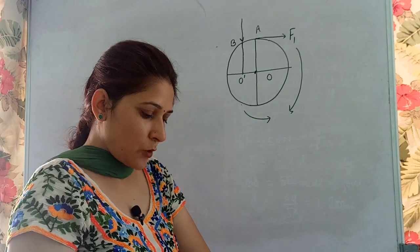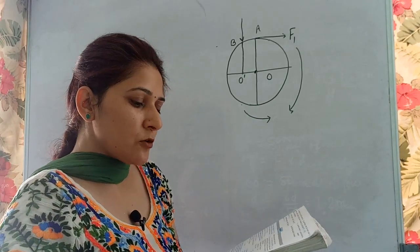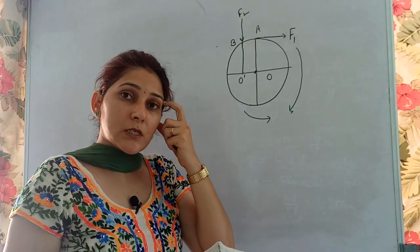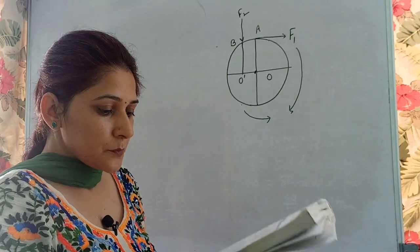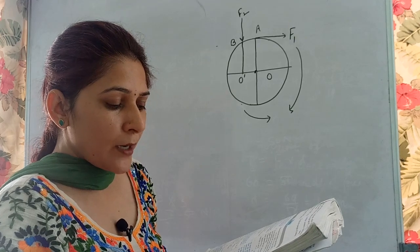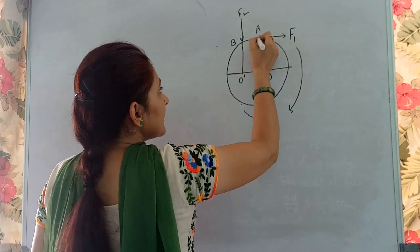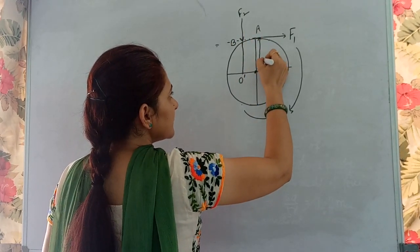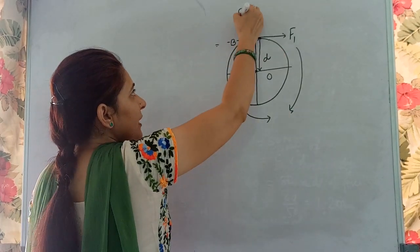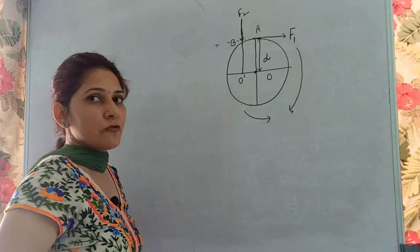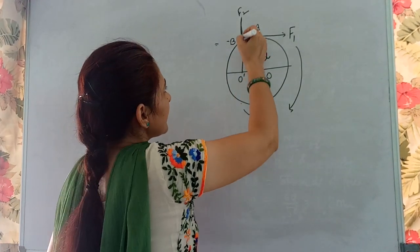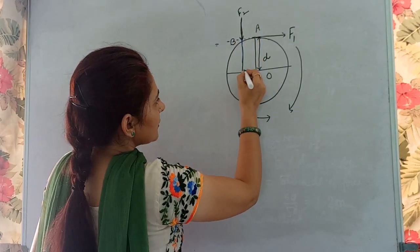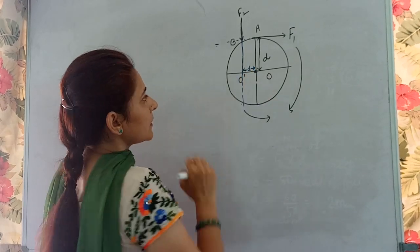The first part asks to show the direction of force F2 in the diagram — it is drawn downward, with the reasoning explained. For the second part — which of F1 or F2 is greater — we look at the perpendicular distances. The line of action of F1 and the pivot gives distance d1; the line of action of F2 and the pivot gives distance d2.